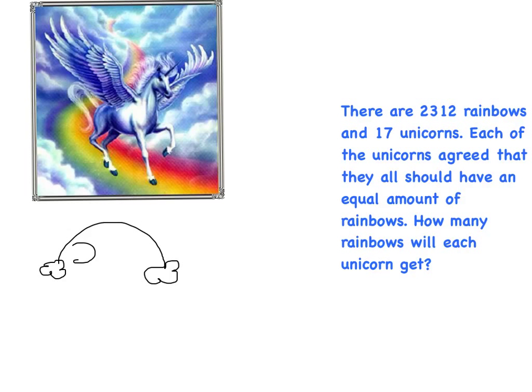There are 2,312 rainbows and 17 unicorns. Each of the unicorns agree that they should all get an equal amount of rainbows. How many rainbows will each unicorn get?